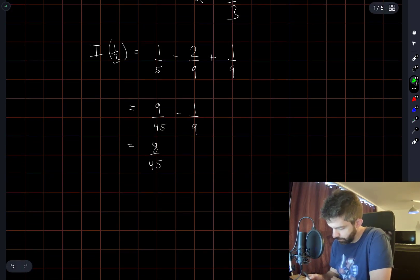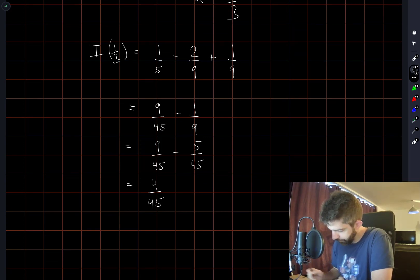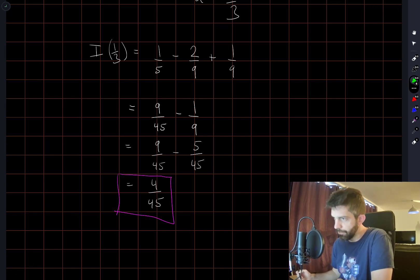Oh, I know where I went wrong. It's right here in the last line, of course. Okay, so 4 over 45 is the answer that I get, which is one of the four options given. So I'm pretty confident in this now.